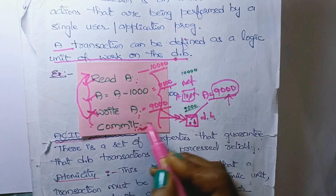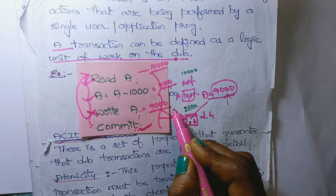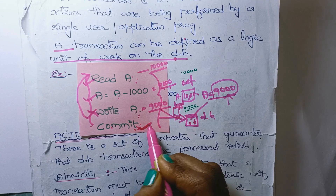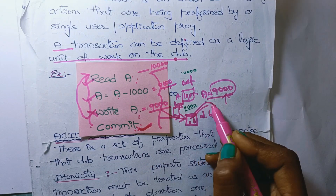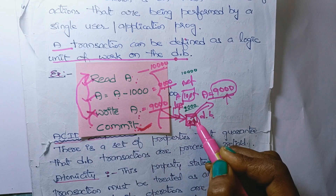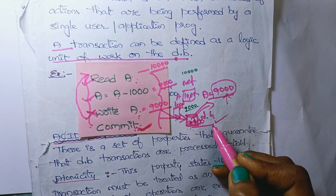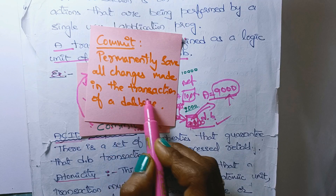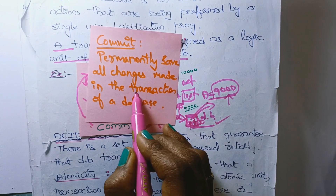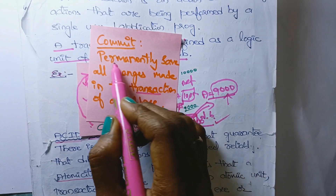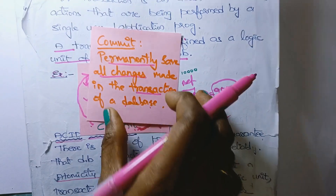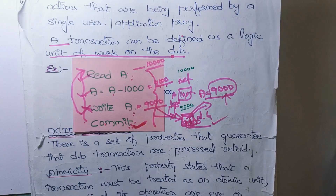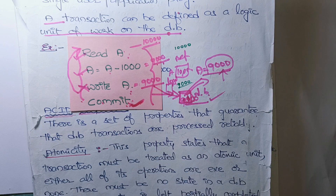The updated value will first be stored in local memory, which is nothing but main memory. After the execution of commit, the changes are permanently done in the database, so 9,000 rupees will be updated in the database. Commit permanently saves all the changes made in the transaction to the database. Once committed, the database values cannot be changed.